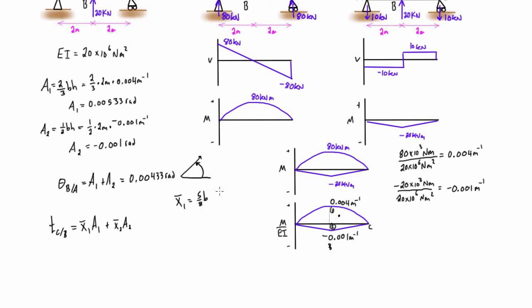So that's five-eighths base, so that is five-eighths times two meters, and that's going to give us 1.25 meters. So for x bar 2, it's just the distance from the centroid to the short edge of a triangle, which is just two-thirds base, and our base is two, so this is going to be 1.333 meters.